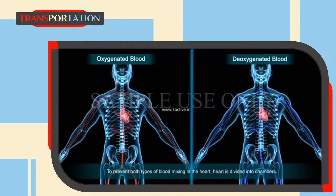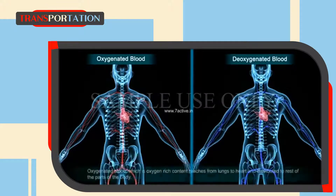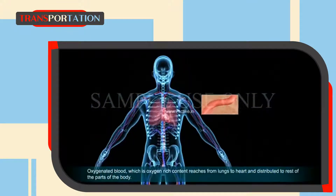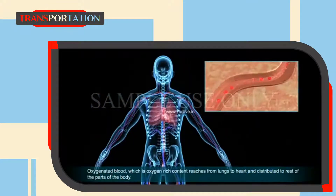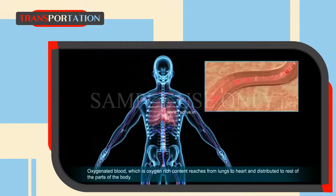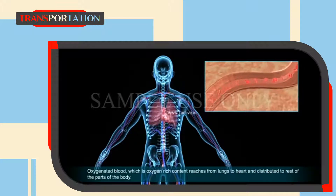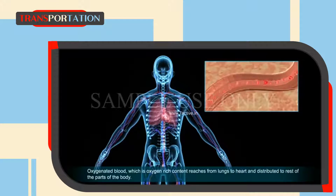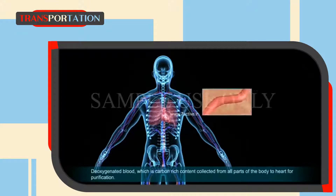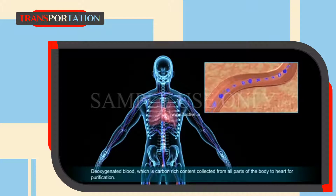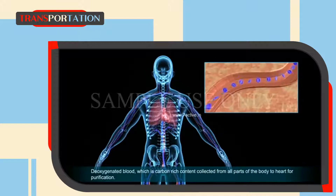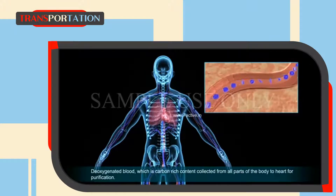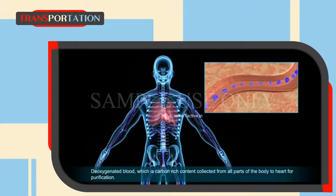To prevent both types of blood from mixing in the heart, the heart is divided into two sides. Oxygenated blood, which is oxygen-rich, reaches from the lungs to the heart and is distributed to the rest of the body. Deoxygenated blood, which is carbon dioxide-rich, is collected from all parts of the body to the heart for purification.